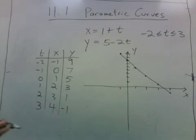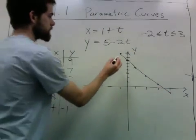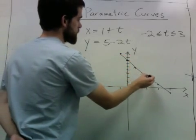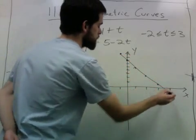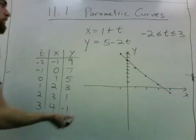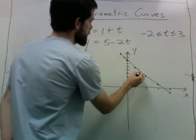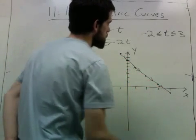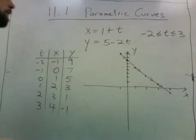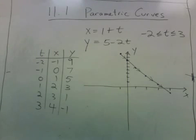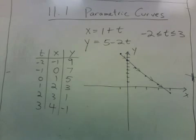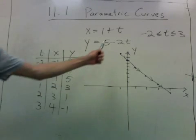As you can see, the points move along in this direction, so we can give a direction to the curve — we can say it's moving this way. This looks like a line, and the way we can confirm that it actually is a line is to get rid of the parameter t.